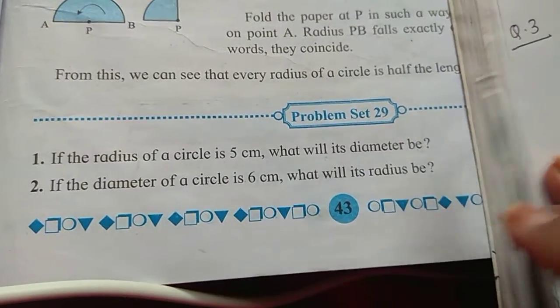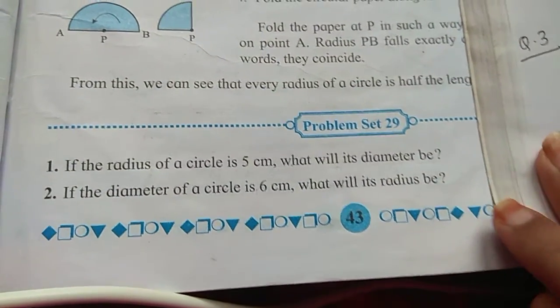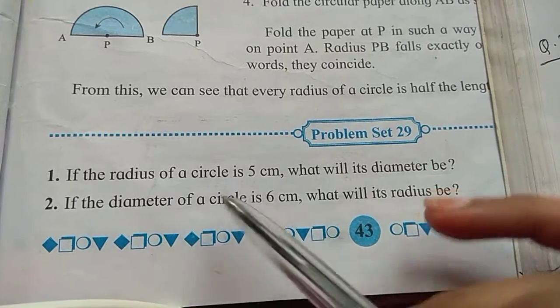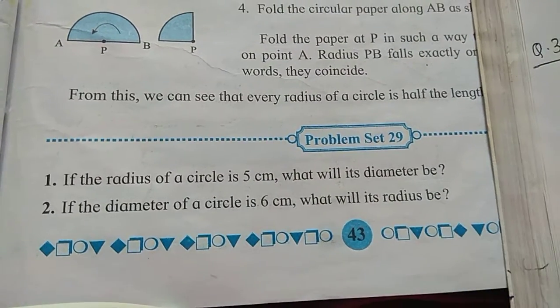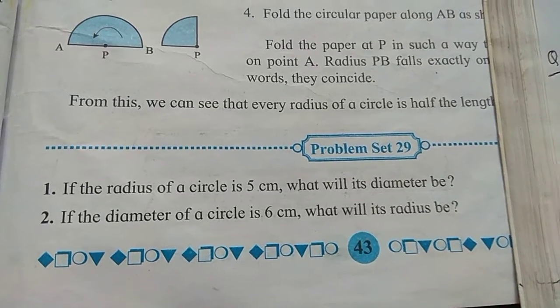Now we have to start with problem set 29. Very first question: if the radius of the circle is 5 cm, what will its diameter be? So let's see how we will be solving this.